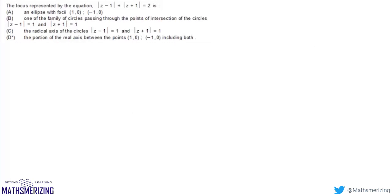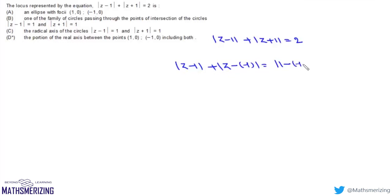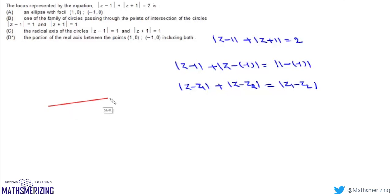The locus represented by mod(z-1) + mod(z+1) = 2 can be rewritten as mod(z-1) + mod(z-(-1)) = |1-(-1)|. This matches the form mod(z-z1) + mod(z-z2) = mod(z1-z2), so z lies on the line segment joining z1 = 1 and z2 = -1. The locus represents all points between -1 and 1, including both endpoints — that is option B.